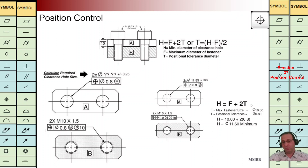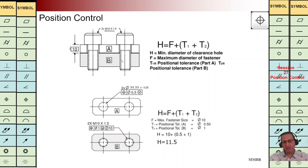T1 and T2 are equal so we say 2T. The fastener diameter — the maximum value — is 10. We have the value of T, and then we calculate the minimum hole diameter for part A. It is 11.6 mm.